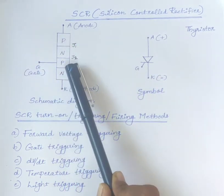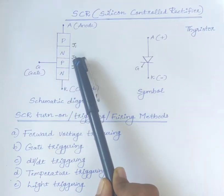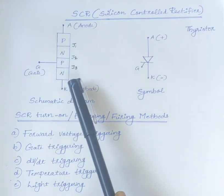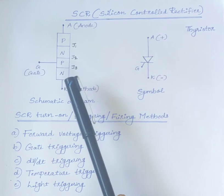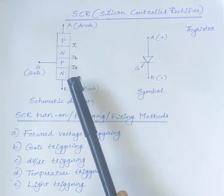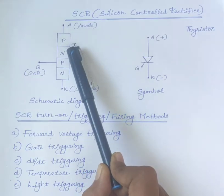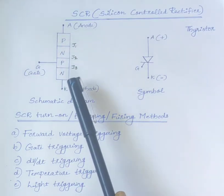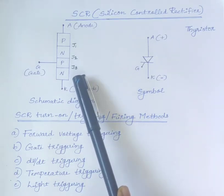Thyristor is a four-layer, three-junction, PNPN semiconductor switching device. A Thyristor consists of four layers of alternate P-type and N-type semiconductors, forming three junctions: J1, J2 and J3.